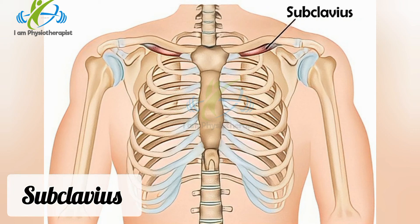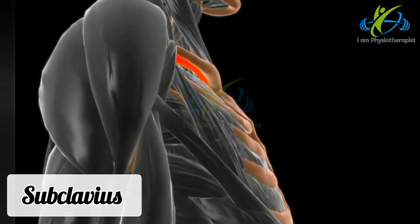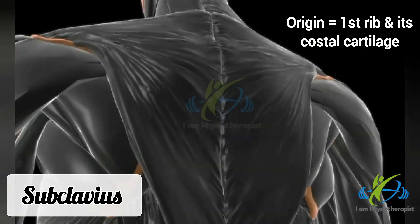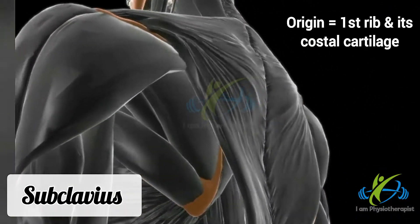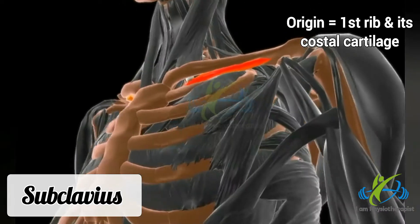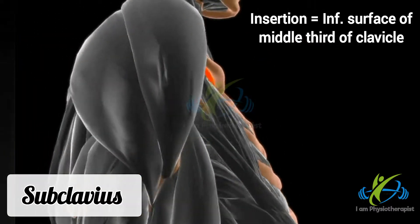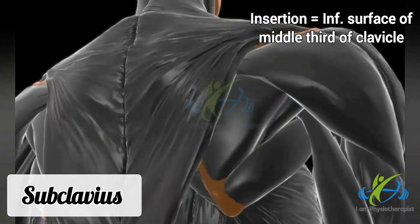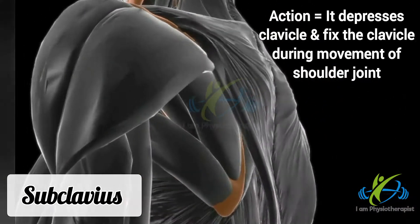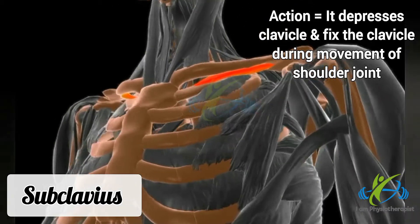Subclavius muscle. Subclavius is a small muscle located under the clavicle. It originates from the first rib and its costal cartilage, and inserts into the inferior surface of the middle one-third of the clavicle. It depresses the clavicle and fixes the clavicle during movement of the shoulder joint.